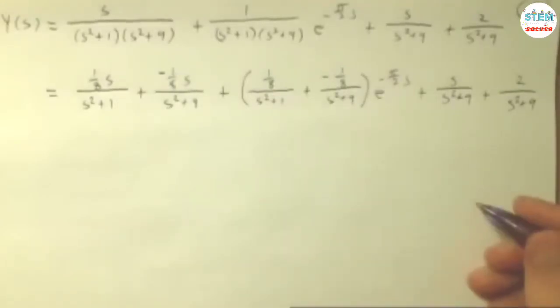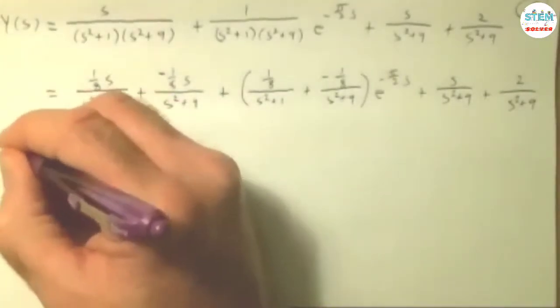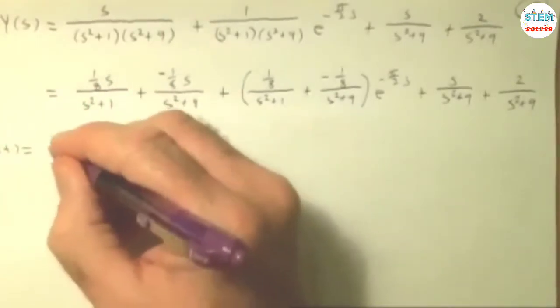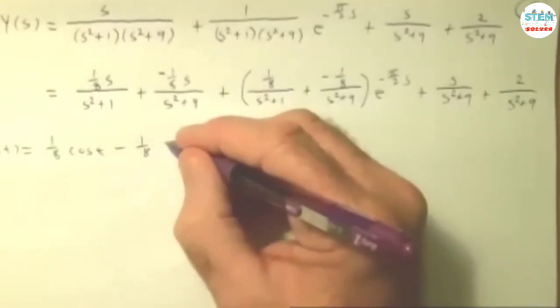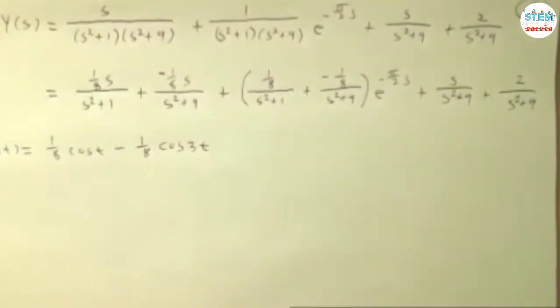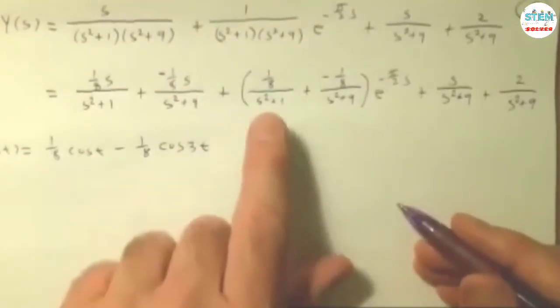So once you have this, you want to take the inverse Laplace transform. So when we go back here, Y(t), this is going to be one-eighth cosine of t minus one-eighth cosine of 3t. Again, that's three squared.